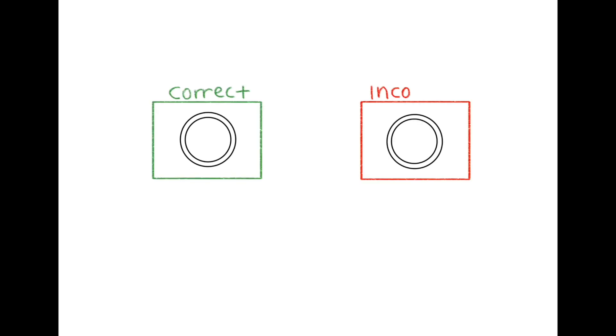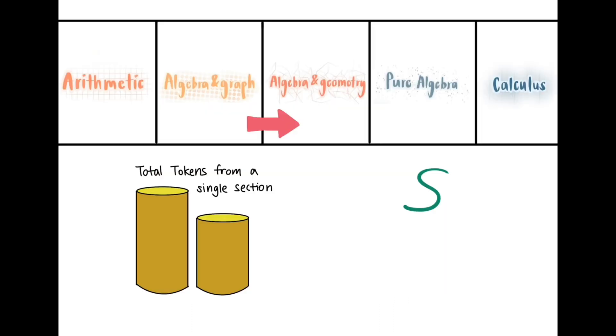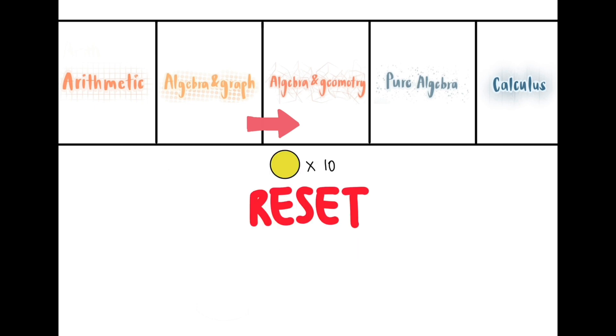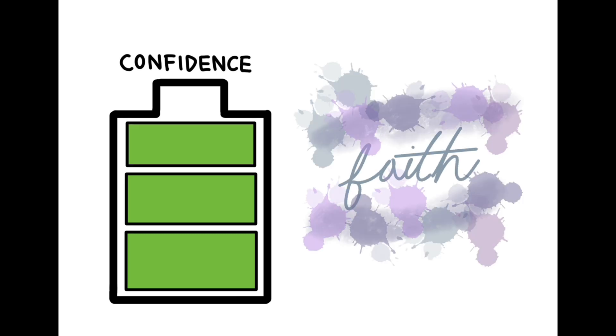Depending on whether the answer is correct, participants gain or lose the tokens they bet. Tokens are banked after each section and reset to 10, giving opportunities for new participants to strengthen their confidence over time.